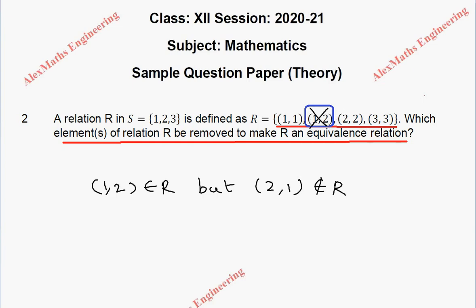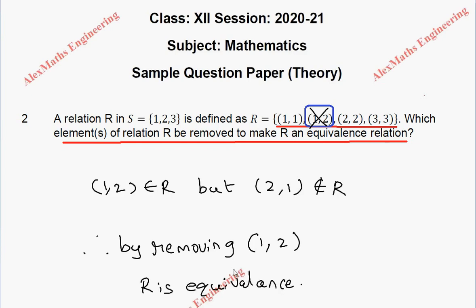By removing (1,2), the relation becomes reflexive, symmetric, and transitive. Therefore, by removing (1,2), R is an equivalence relation.